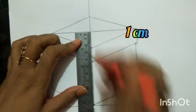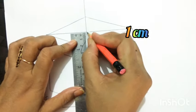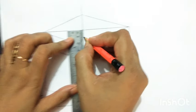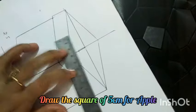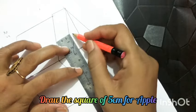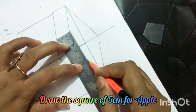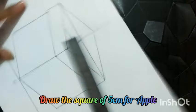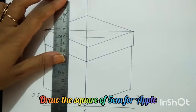Take 1 centimeter below the line. Draw a 5 centimeter line on this point to create a 5 centimeter square.